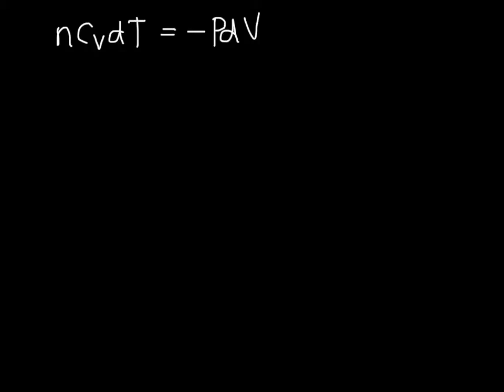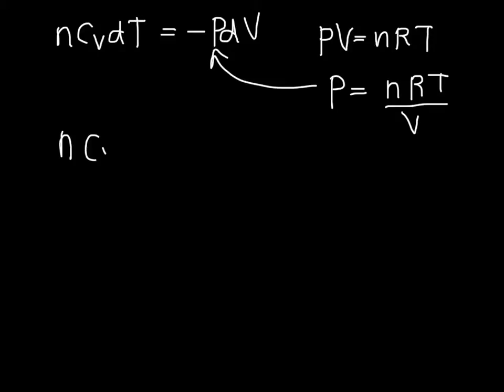So there's a lot going on. We can't do the integrals directly. However, we can use the ideal gas law, which tells us that PV equals NRT. So we can make a substitution for P, which equals NRT divided by V. We're going to plug this in, and we end up with NcvdT equals negative NRT over V dV.